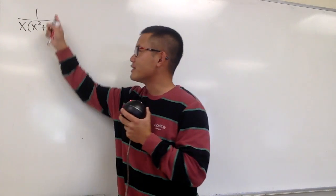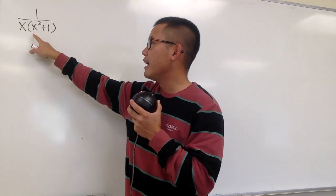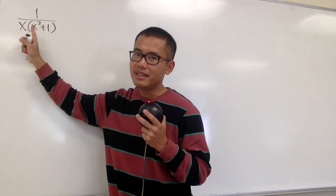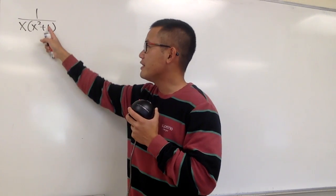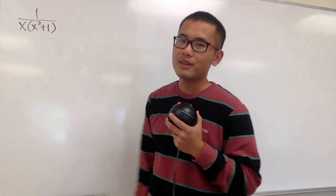We are going to do the partial fraction of 1 over x times (x squared plus 1). As we can see, this is a linear factor, and here we have an irreducible quadratic factor.